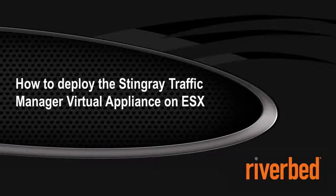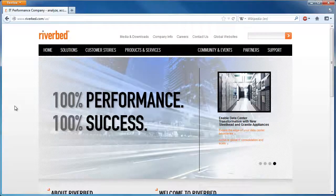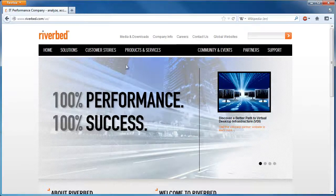In this video we're going to go over how to deploy the Stingray Traffic Manager virtual appliance onto VMware ESX and provide some best practices. The first thing you want to do is go to riverbed.com and select the Stingray product family from the Products and Services menu at the top.